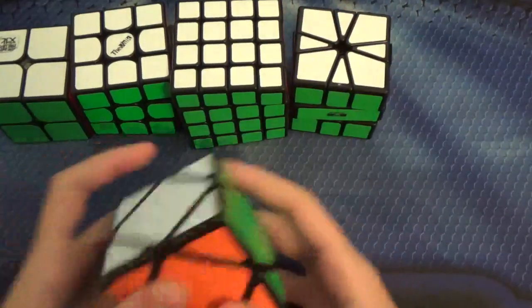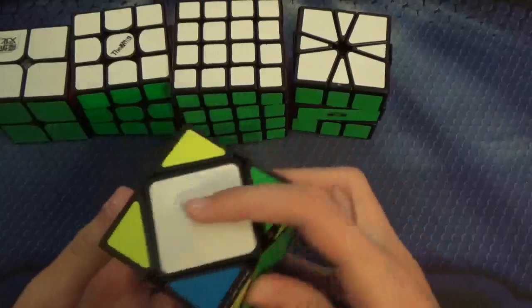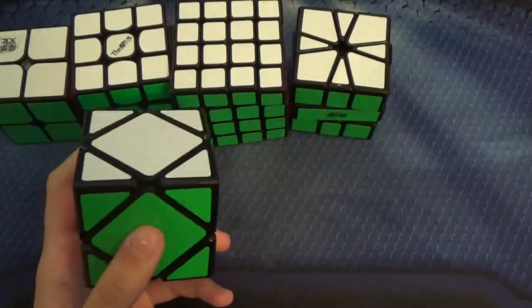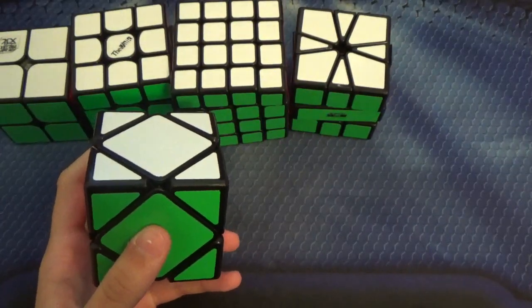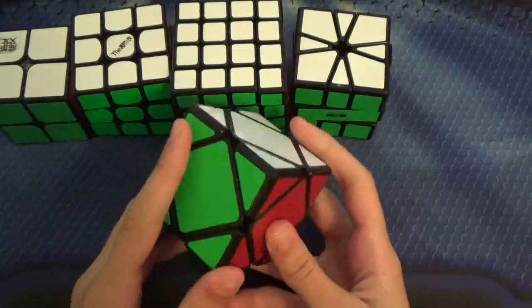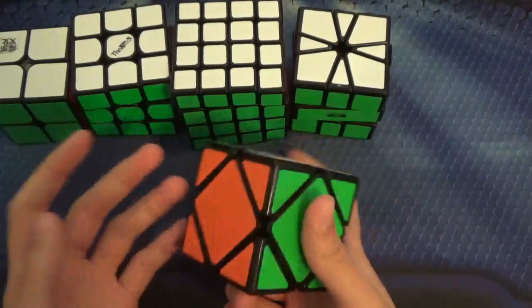For Skewb, this is the Chi Skewb. There are 2 rounds of Skewb, I believe. Hopefully I'll be able to get a sub 4 average and just a sub 3 single.